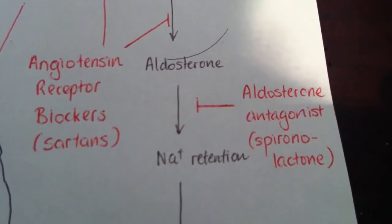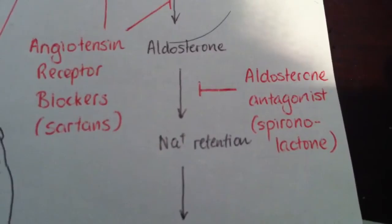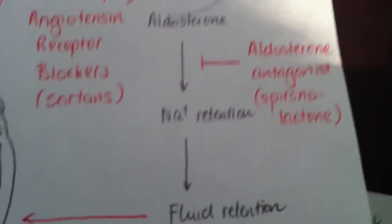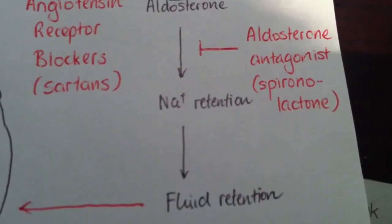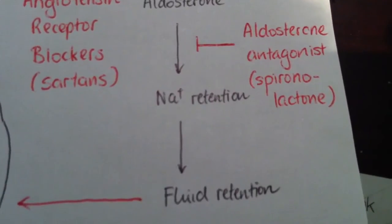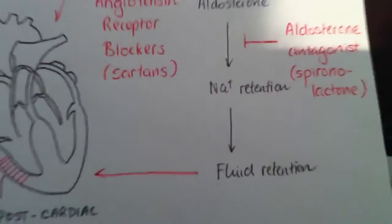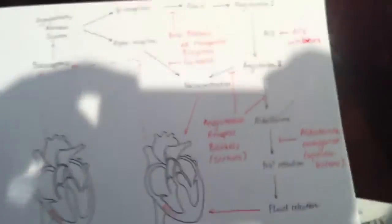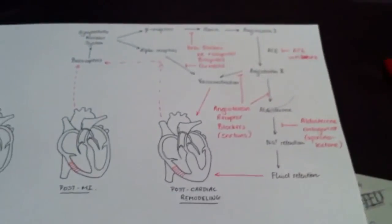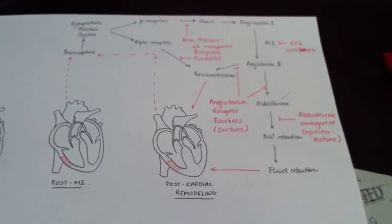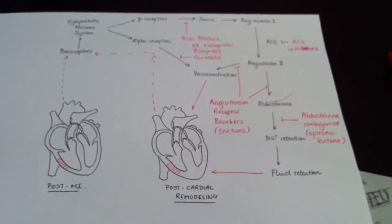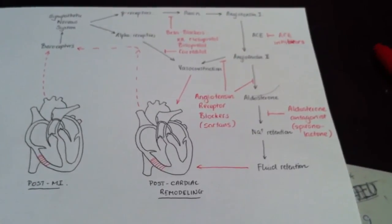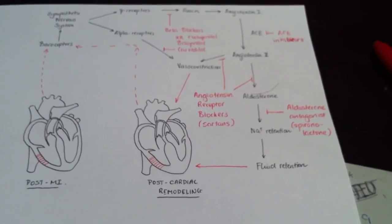Aldosterone antagonists stop aldosterone from binding to its receptors, which prevents sodium retention and fluid retention. So you can see all these drugs aim to prevent and slow down the disease progression and cardiac remodeling.